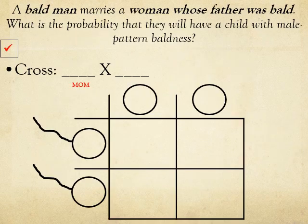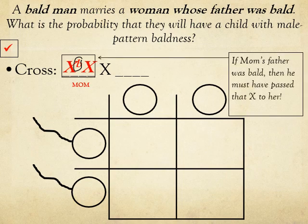Let's do an example problem. A bald man marries a woman whose father was bald. What is the probability they will have a child with male pattern baldness? First, let's look at mom's genotype. We know that mom, being female, has to be XX. She also has the allele for male pattern baldness on one of her X chromosomes, because if her father was bald, he would have passed that X chromosome onto her. However, mom is not bald, because male pattern baldness is a recessive trait masked by the normal X chromosome.